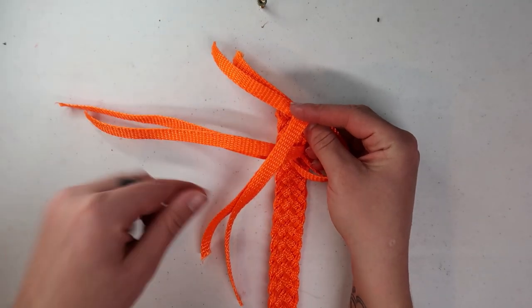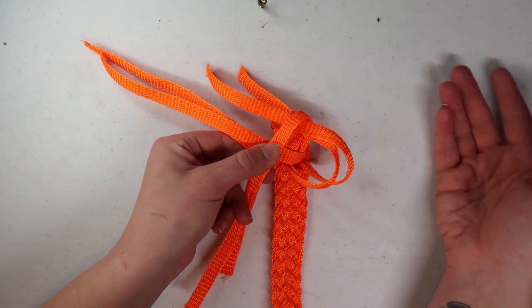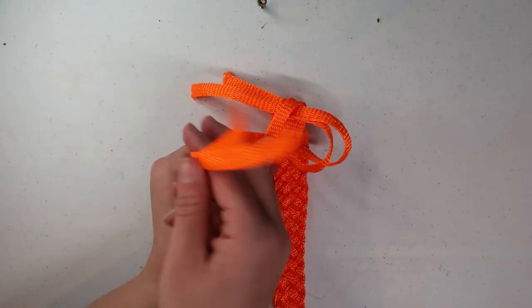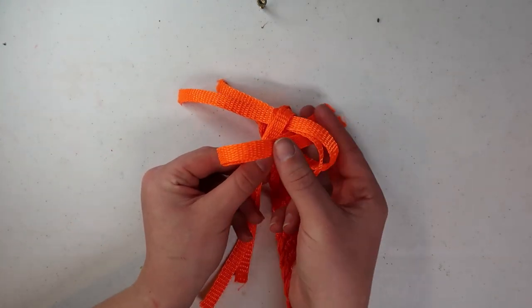From there, you'll take group two, again moving counterclockwise, folding it back over group one, and then on top of group three. For our last group, we'll take group three, going over group two, and in that gap we left in group one.